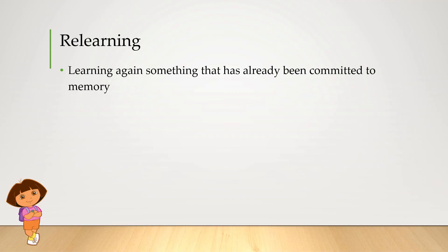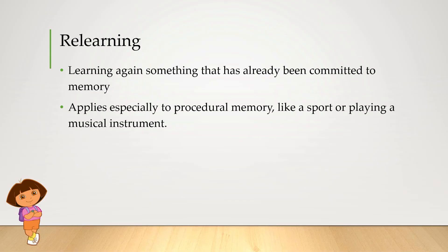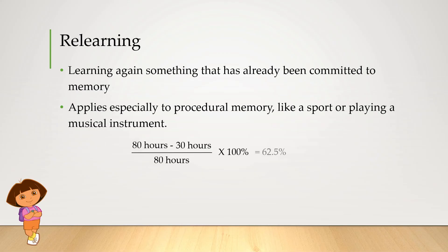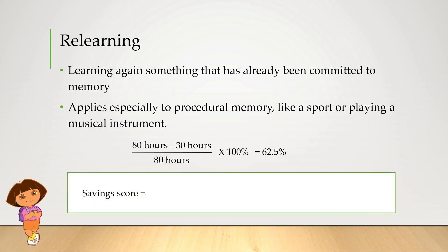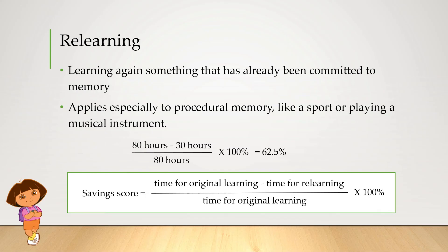Relearning applies especially to procedural memory, like a sport or playing a musical instrument. You might think of something you did ages ago and recently tried picking up again — even though you probably weren't as good as you were then, it doesn't take as long to pick up that skill again. For example, if fully mastering a skill takes 80 hours, but because you've learned it before it only takes 30 hours this time, you've saved 50 hours. We can express this as a savings score: time for original learning minus time for relearning, divided by the original time, multiplied by 100%. That tells you how much time and effort you've actually saved.